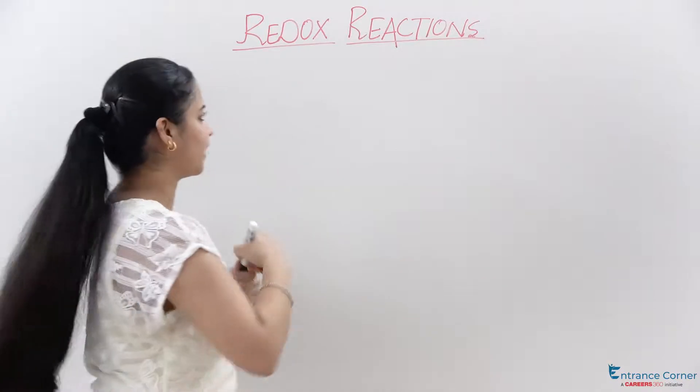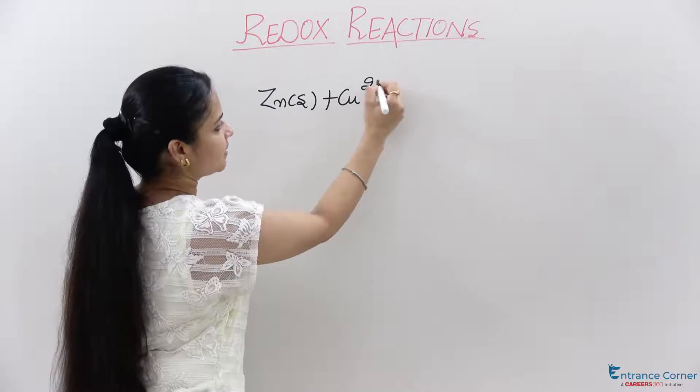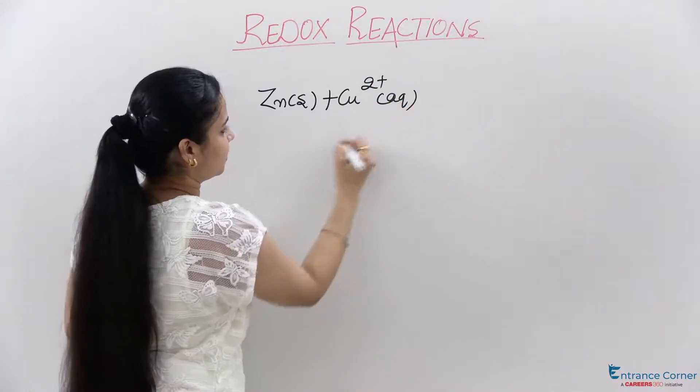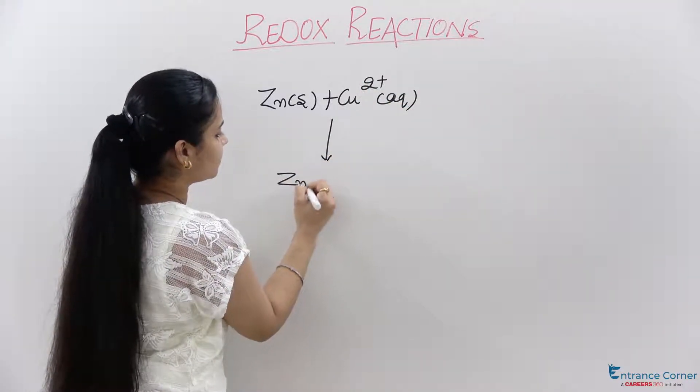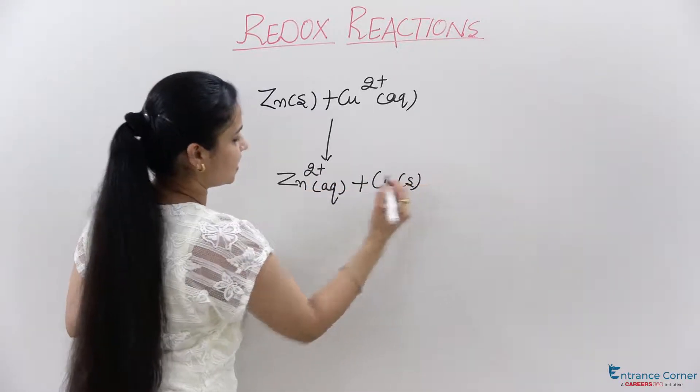Let's see an example. Zn in solid state plus Cu2+ in aqueous state will give us Zn2+ in aqueous state plus Cu in solid state.